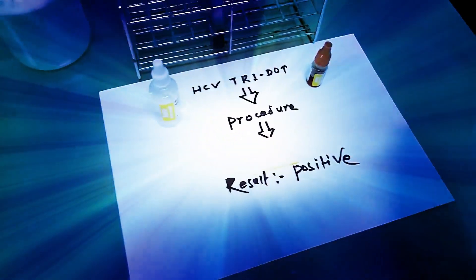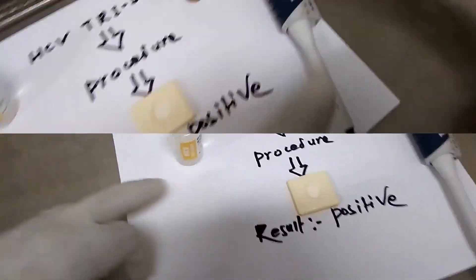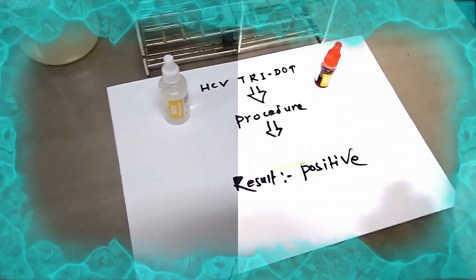Extra we need sample working hypochlorite solution for decontamination. In the place of dropper we can use micropipette tool.